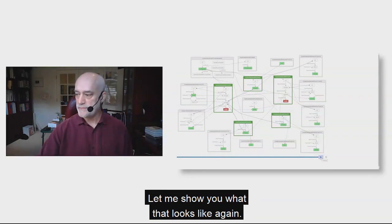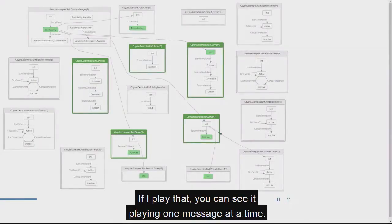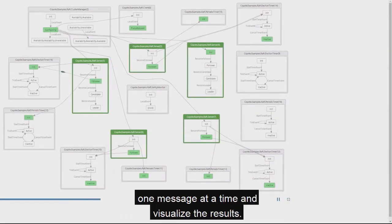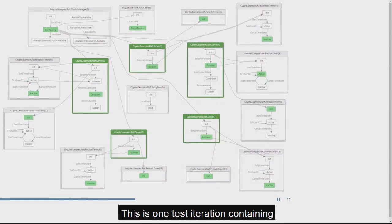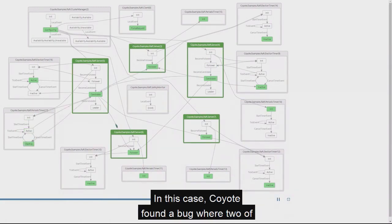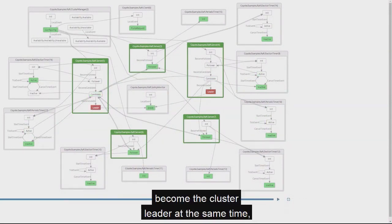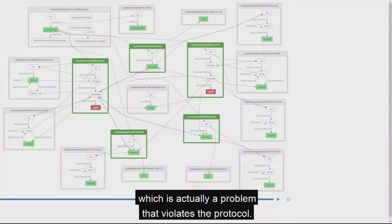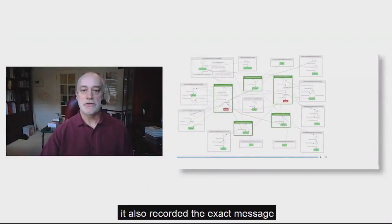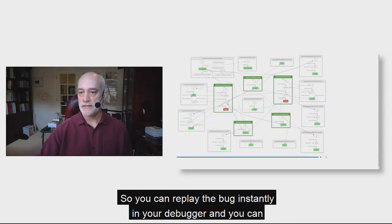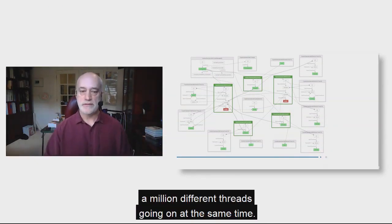Let me show you what that looks like. You can see it playing one message at a time. So Coyote is able to test your system one message at a time and visualize the results. This is one test iteration containing one specific ordering of thousands of messages through the system. In this case, Coyote found a bug where two of the servers in this cluster became the cluster leader at the same time — these red nodes here — which actually violates the protocol. When Coyote found this bug, it also recorded the exact message ordering required to create it, so you can replay the bug instantly in your debugger and debug it without a million different threads going on at the same time.